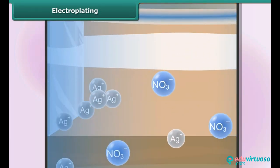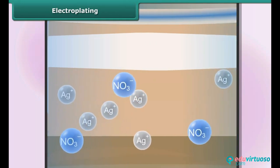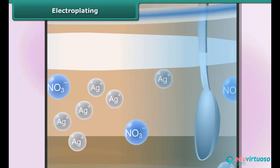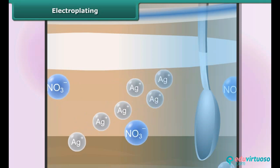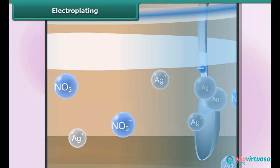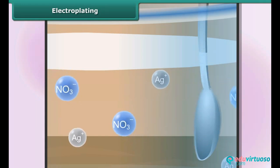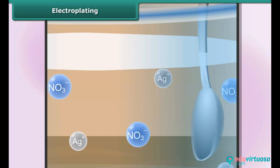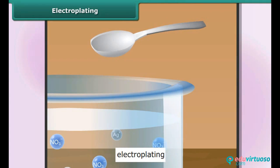This results in the formation of positively charged ions which separate from the anode and pass into the solution. There they migrate towards the cathode, attracted by its negative charge. When they reach the cathode, they accept electrons from it and change into silver atoms, which deposit onto the cathode in the form of a thin metallic layer. The thickness of the layer depends on the conditions under which the electrolysis is conducted. This process is known as electroplating.